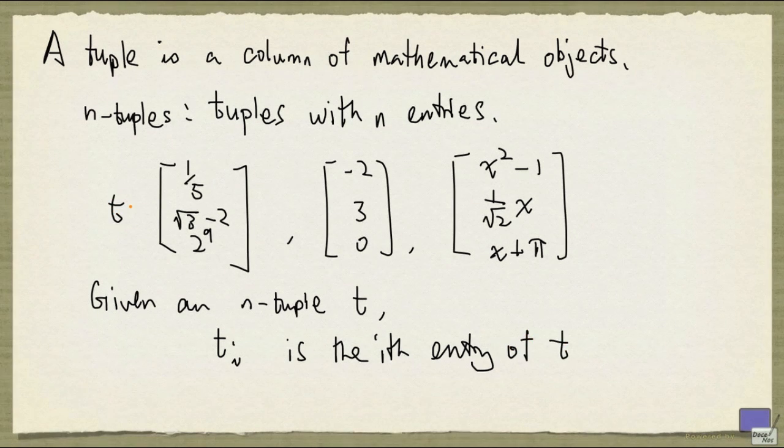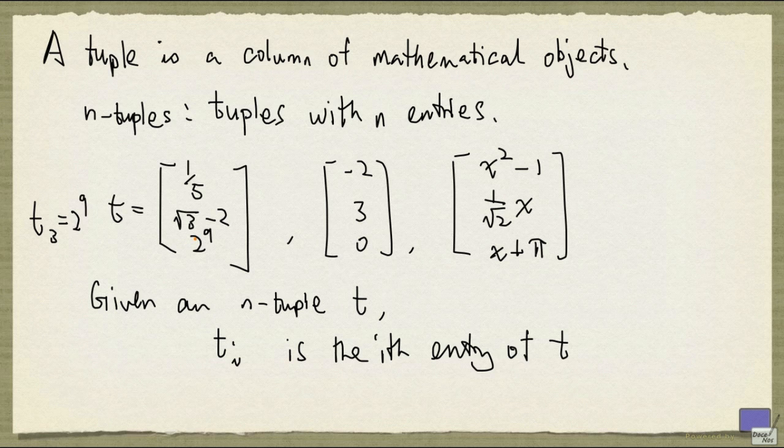So suppose that this 3-tuple up here is called t, then t3 would be 2 to the 9, because that's the third entry.